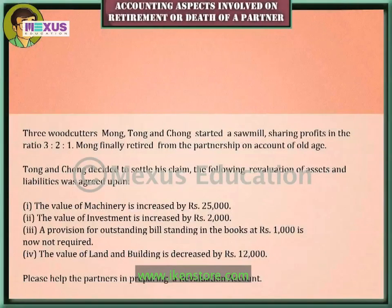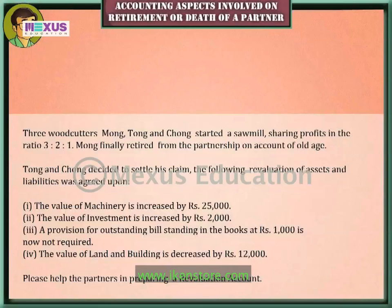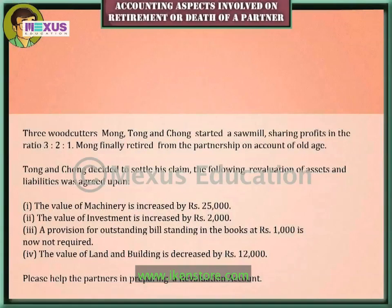Illustration: Three woodcutters — Mong, Tong, and Chong — started a sawmill sharing profits in the ratio of 3:2:1. Mong retired on account of old age; Tong and Chong decided to settle his claim. The following revaluation of assets and liabilities was agreed upon: (1) machinery increased by ₹25,000; (2) investment increased by ₹2,000; (3) a provision for outstanding bill of ₹1,000 is no longer required; (4) land and building decreased by ₹12,000. Prepare a revaluation account.